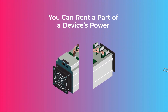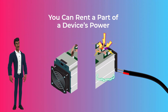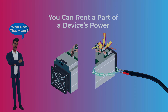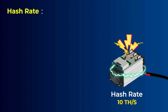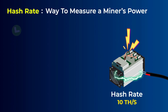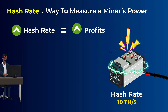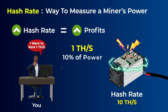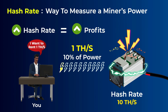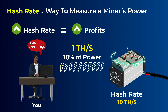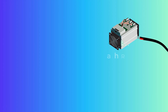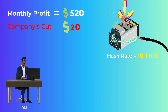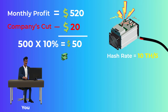Most of the time, you can rent a portion or a percentage of a device's power. For example, let's say that a Bitcoin miner has a hash rate of 10 terahashes per second. A hash rate is the way we measure the power of a miner — the higher the hash rate, the higher the profits it can make. You could create a contract with the company to rent 1 terahash per second of this device, which means you are renting 10% of this miner. So if this miner makes a monthly profit of $520, the company may take $20, and you will get $50, which is 10% of the profits after the company takes its cut.